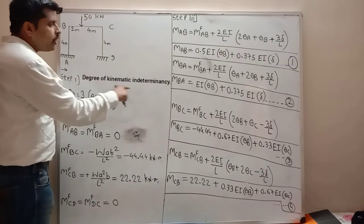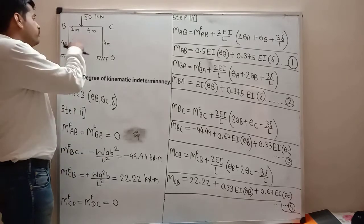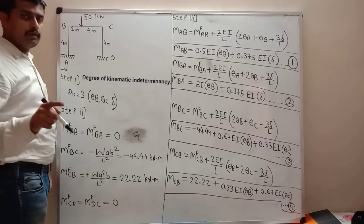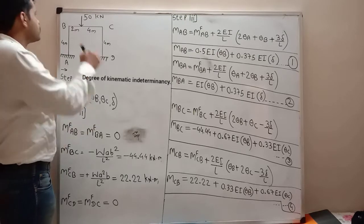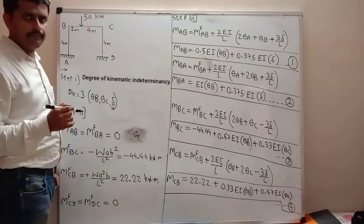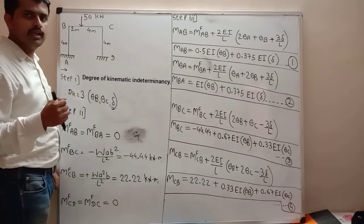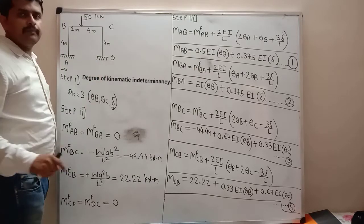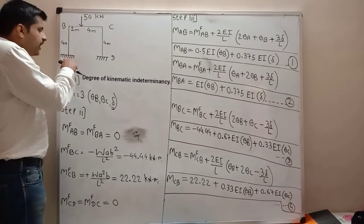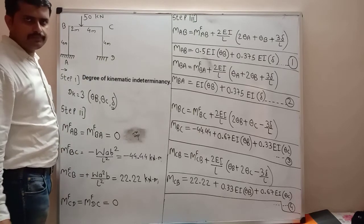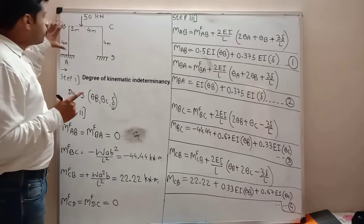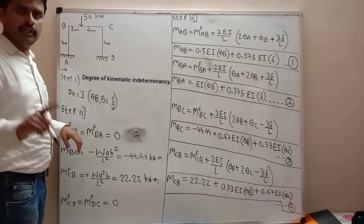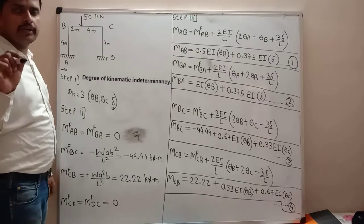Step 1: Find the degree of kinematic indeterminacy. From the frame, you can see there are two unknowns: theta B and theta C. But our frame is of sway type, hence delta is also unknown. So there are three unknowns: theta B, theta C, and delta. Supports A and D are fixed, hence theta A and theta D will be zero. The effect of delta will be on spans AB and CD only; for span BC, delta remains zero.